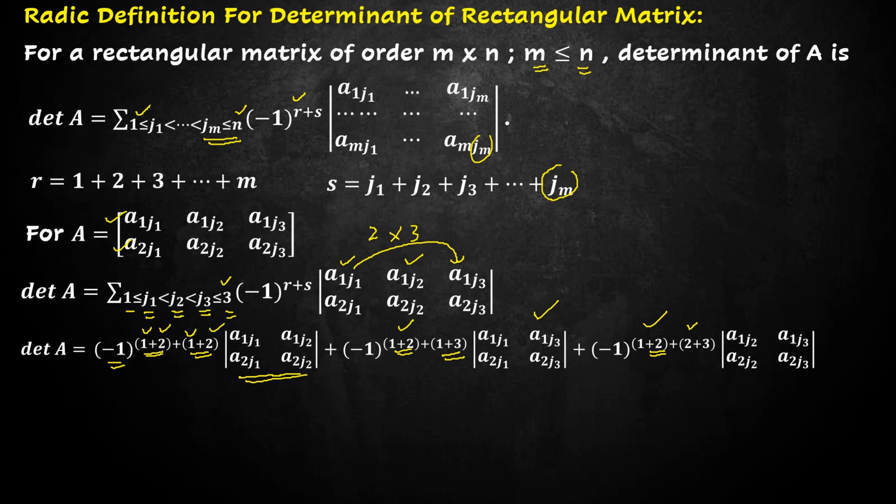And then sum of second and third column. We take second and third column and form a 2 x 2 determinant.